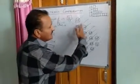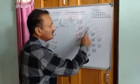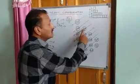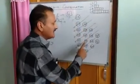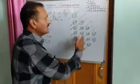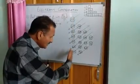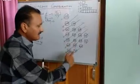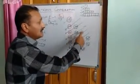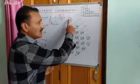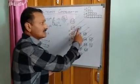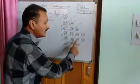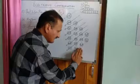Then you will move to the second vertical row. In the second vertical row you will start from 2p: 2p, 3p, 4p, 5p, 6p, and 7p. Then for the D subshell, D starts from 3d: 3d, 4d, 5d, 6d, and 7d. And lastly, the F subshell starts from 4f.